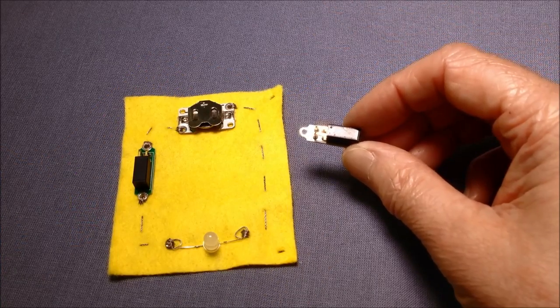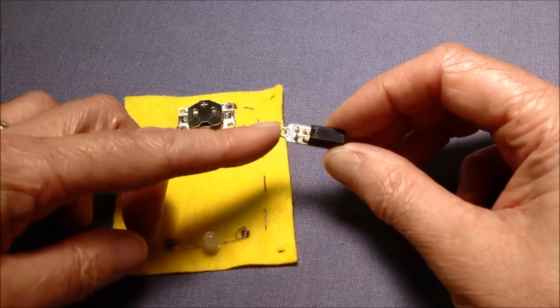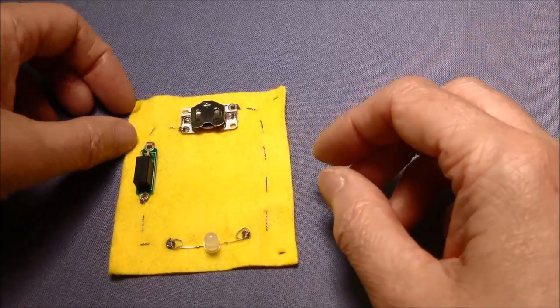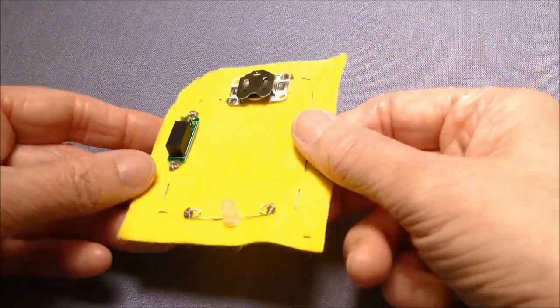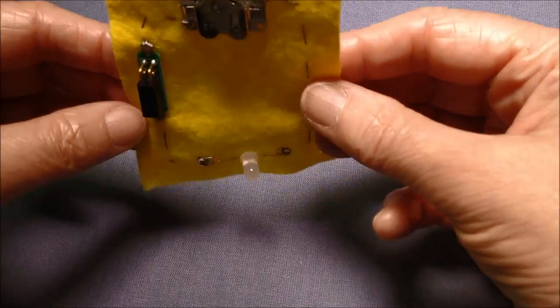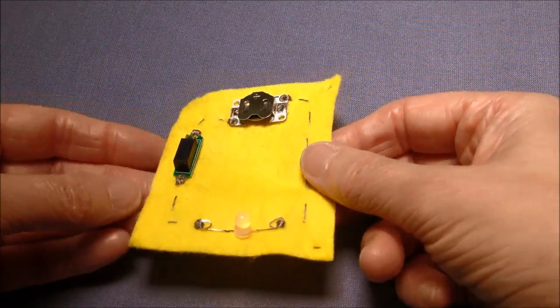This one is called a tilt switch. So when this switch is tilted, the LED lights up. We can see it lighting up as the fabric is moved.